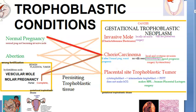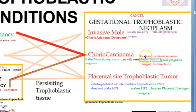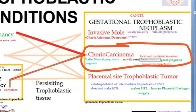For choriocarcinoma management, you can remove the carcinomatous tissue and give chemotherapy: methotrexate, cyclophosphamide, etoposide, and vincristine. Hysterectomy can also be performed if required.